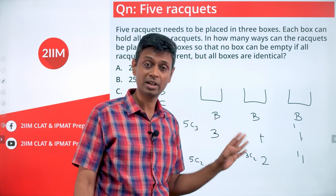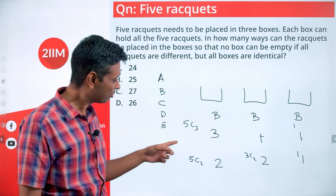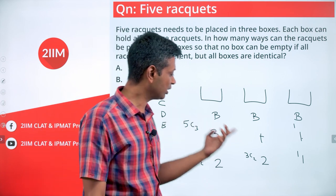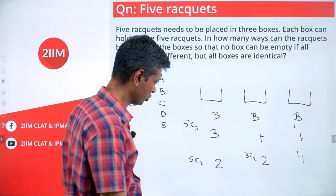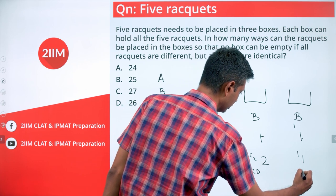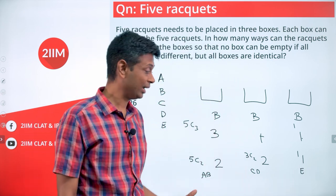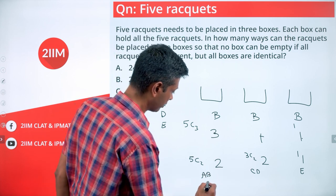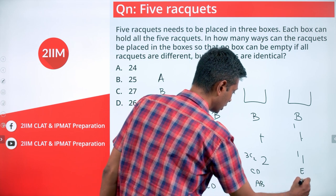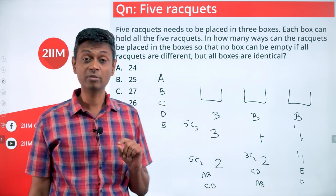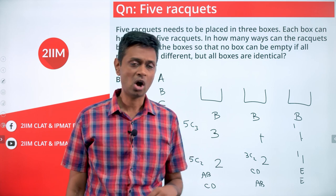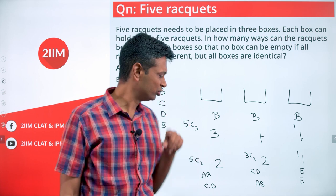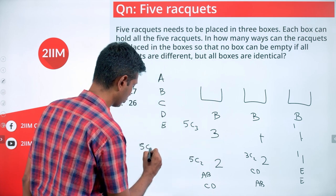Now for 2-2-1: out of five I select two — say A and B — then out of the remaining three I select two — say C and D — and E goes into the last box. But there's a catch again: selecting A-B for the first box and C-D for the second is identical to selecting C-D for the first and A-B for the second, because the boxes are identical. So this is not simply 5C2 × 3C2.